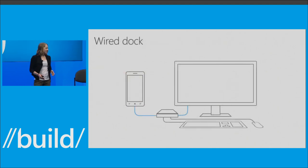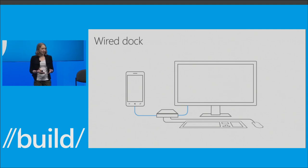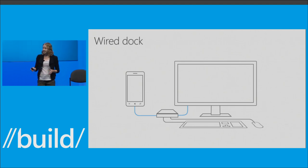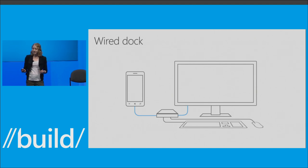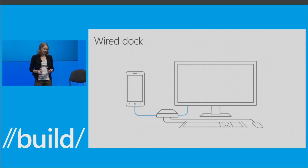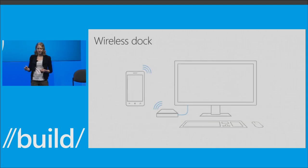First, I want to make sure everyone's grounded in the three hardware configurations available in Windows 10. The first is a wired dock — someone going home, sitting at a desk with a monitor, keyboard, and mouse. The dock serves as a hub for these accessories: monitor, keyboard, mouse, and phone. The keyboard and mouse are plugged in via USB or paired via Bluetooth. The big benefit here is that the phone will be charging while using the external screen and you'll get the best performance possible.